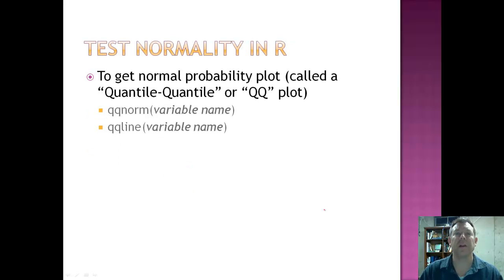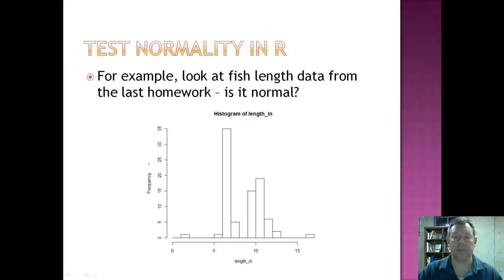So our first technique I said is graphical. It's a normal probability plot, which we can call a quantile-quantile or a QQ plot. And real easy to do in R. You just use the command QQ norm and then whatever variable you're testing. So whatever variable in R contains your data, you put that in the parentheses. And that will provide the quantile-quantile data. But then you also need to add the QQ line with the same variable name to get the proper plot. And when you do that, let's do that.